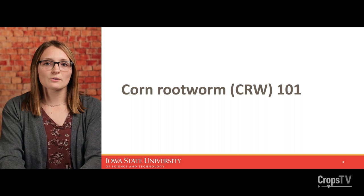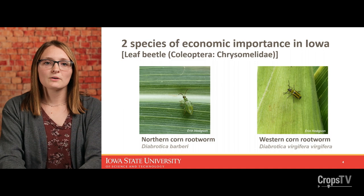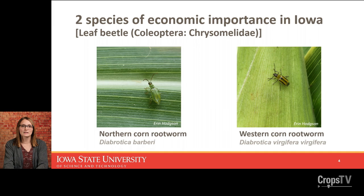Starting with a little corn rootworm 101. There are two species of economic importance in Iowa. We have the northern corn rootworm on the left — the little green one. Sometimes you might see this same beetle in a tan color when they're just emerging from the soil, but it's the little green one without any other markings. That would be the northern corn rootworm.